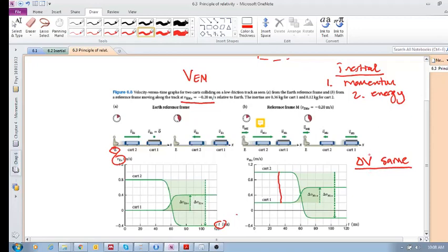Now, what can you deduce from this? If your delta V stays the same in any inertial reference frame, then what else stays the same? Your delta P will stay the same.